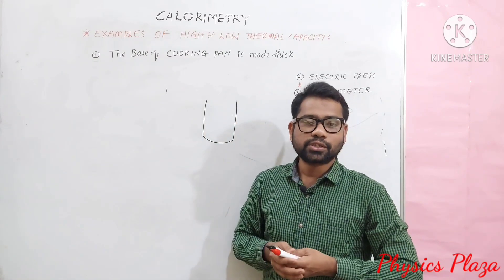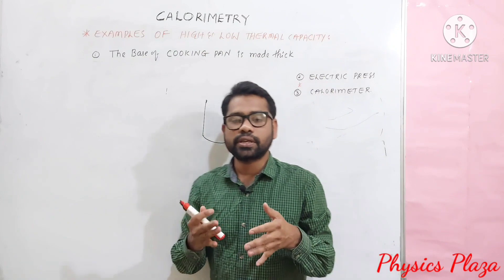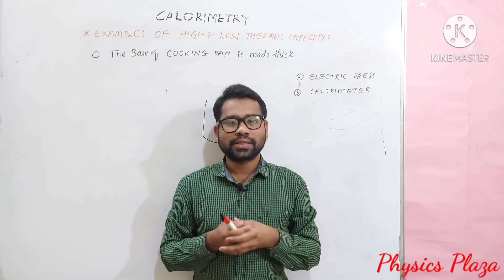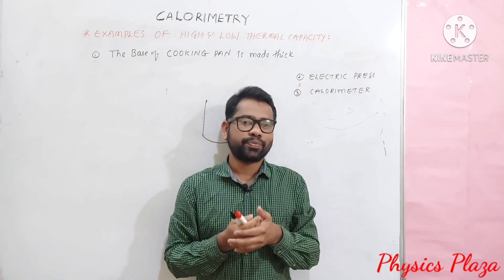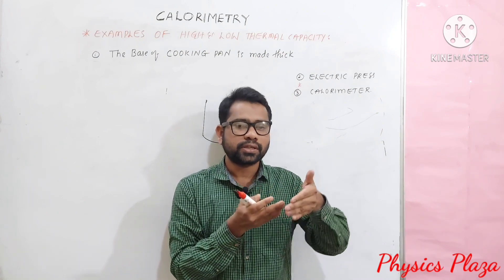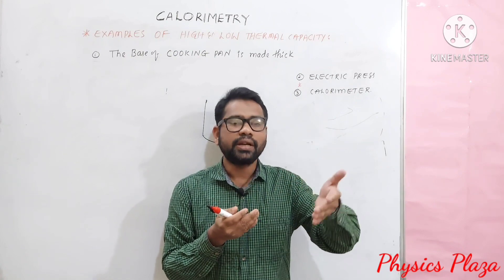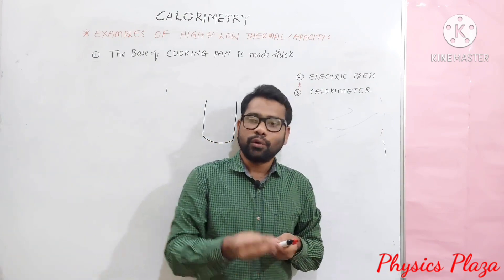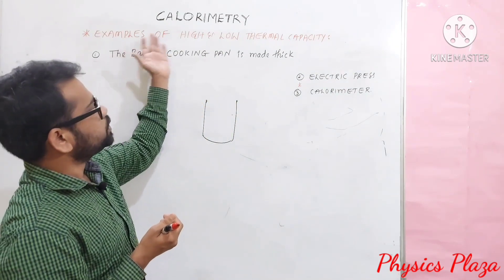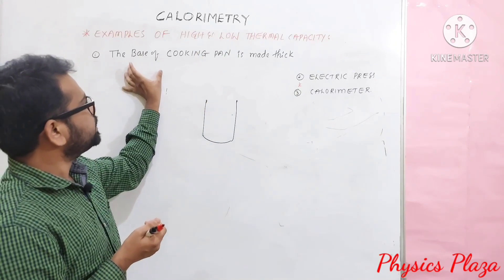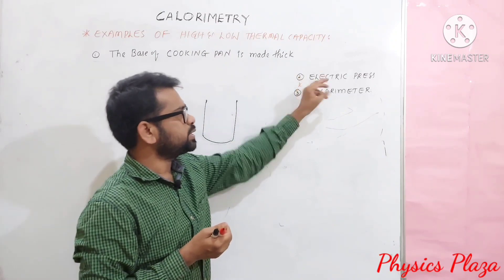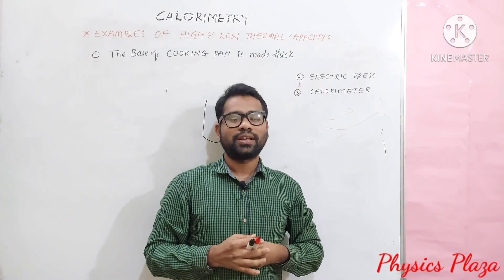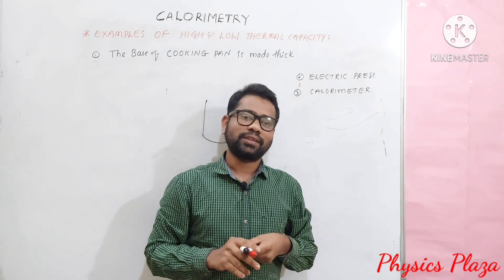So these are the topics discussed today. We discussed the consequences of high specific heat capacity of water — its value is 1 calorie per gram degree Celsius or 4200 joule per kg Kelvin. Due to high specific heat capacity, the climate near the seashore is moderate, water is used as a heat reservoir, water is used as an effective coolant, and farmers fill their fields with water to protect crops from frost. We also discussed examples of high and low thermal capacity — why the base of a cooking pan is made thick, why the base of an electric press is made thick, and why a calorimeter is made with a thin copper sheet. In the next session, we will solve numericals. Thanks for watching — if you like the video, please share and like the channel.